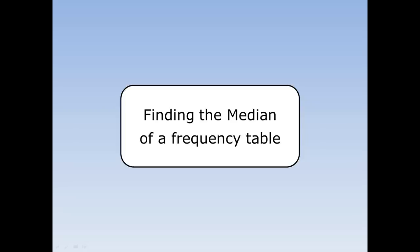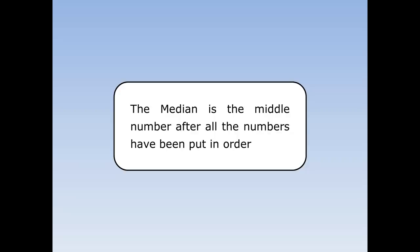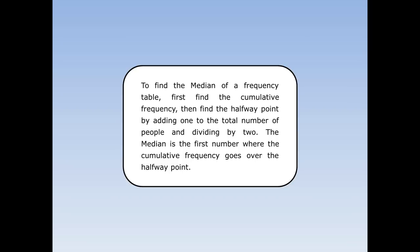Finding the median of a frequency table. The median is the middle number after all the numbers have been put into order. To find the median of a frequency table, first find the cumulative frequency, then find the halfway point by adding 1 to the total number of people and dividing by 2. The median is the first number where the cumulative frequency goes over the halfway point.